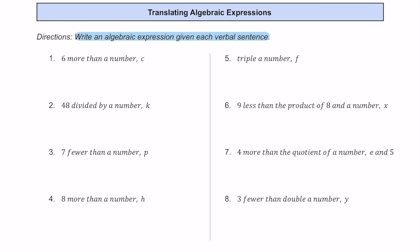For number one, we have this verbal sentence: six more than a number c. Six is one of the parts of this expression, as well as the variable c. The two terms are six and c. When we see the phrase 'more than,' it means we're going to be adding. So the expression is c plus six, writing c first and then adding six afterwards.